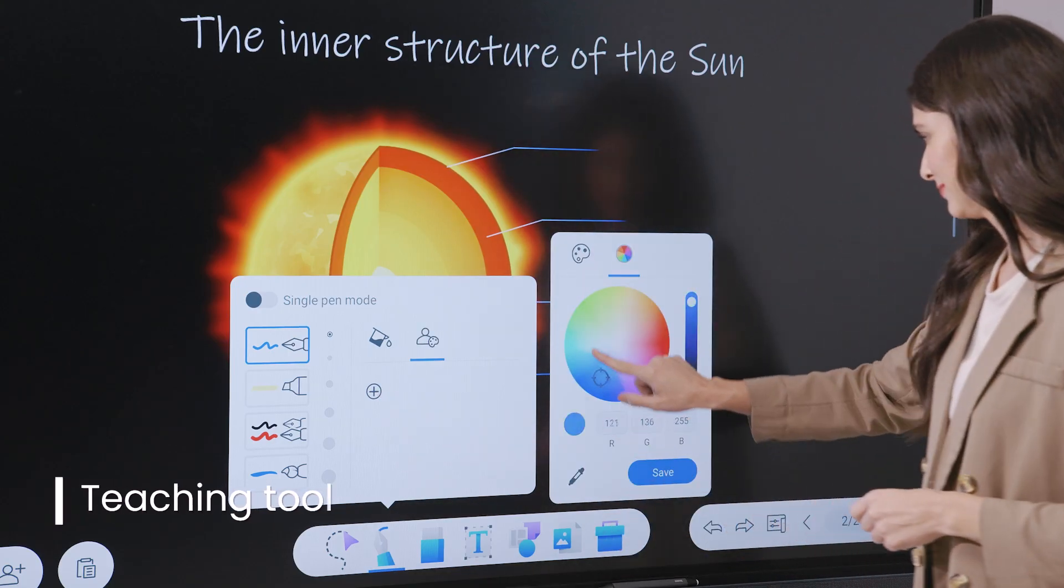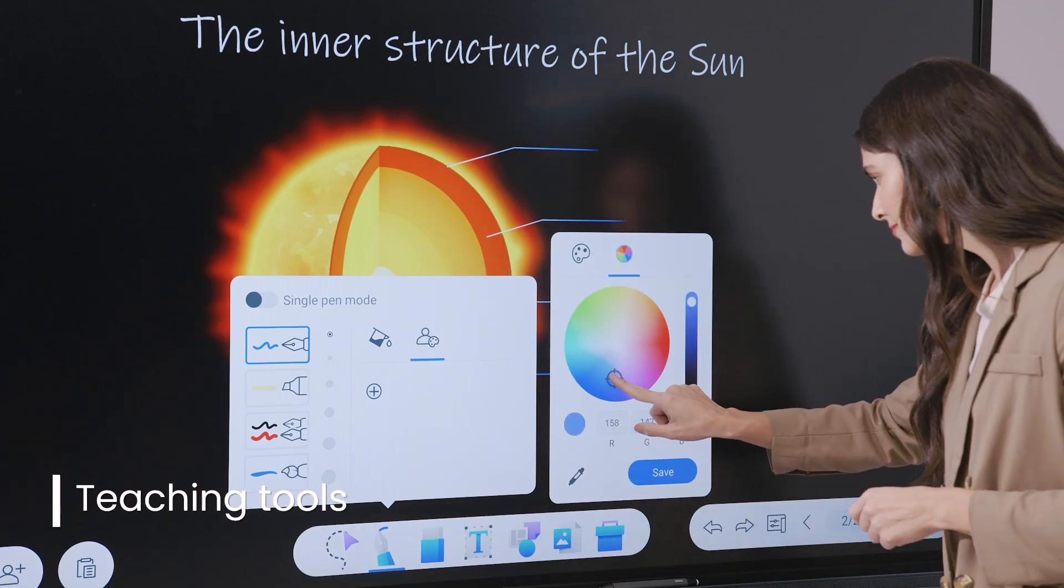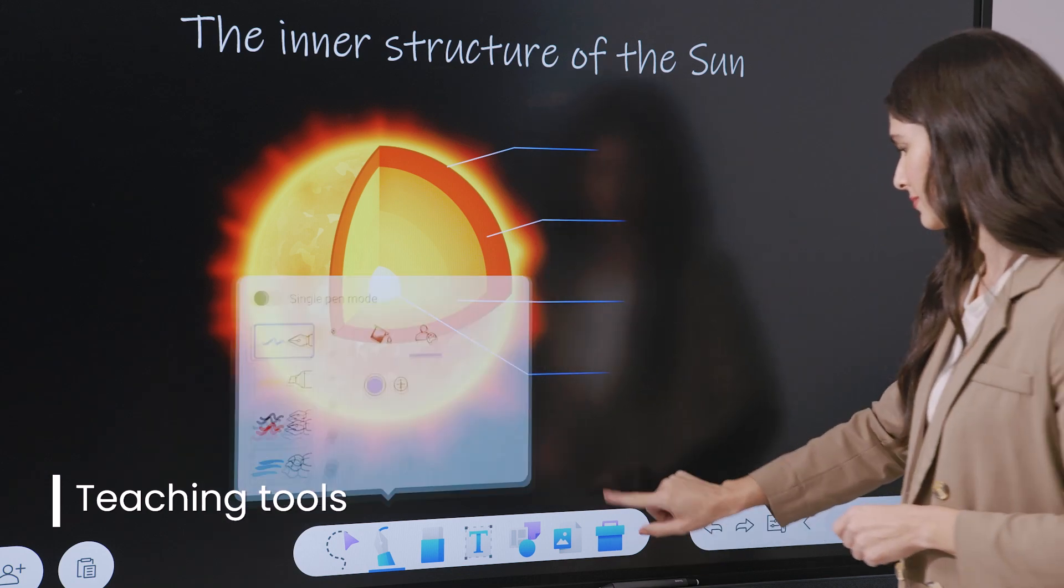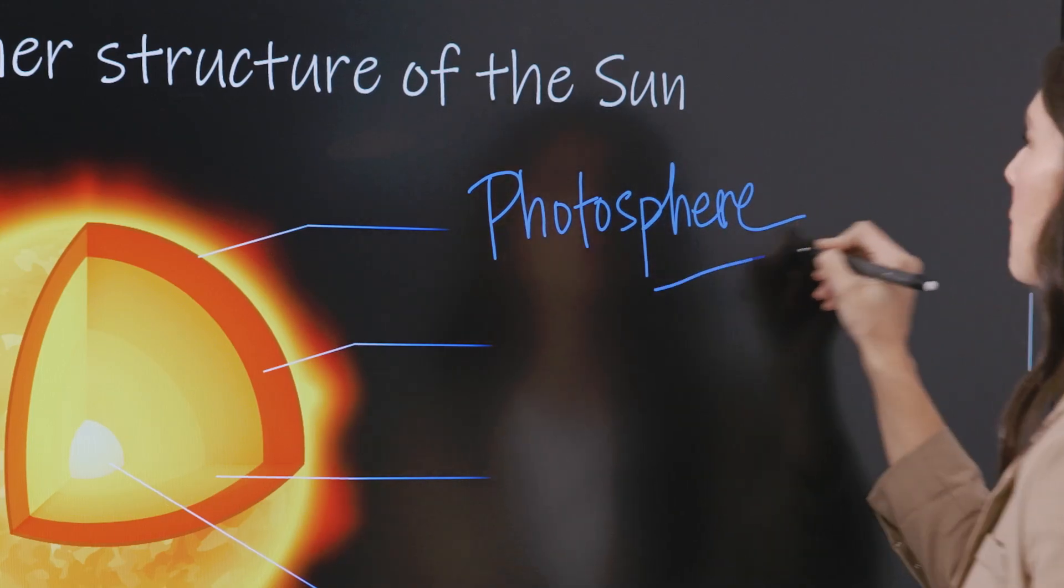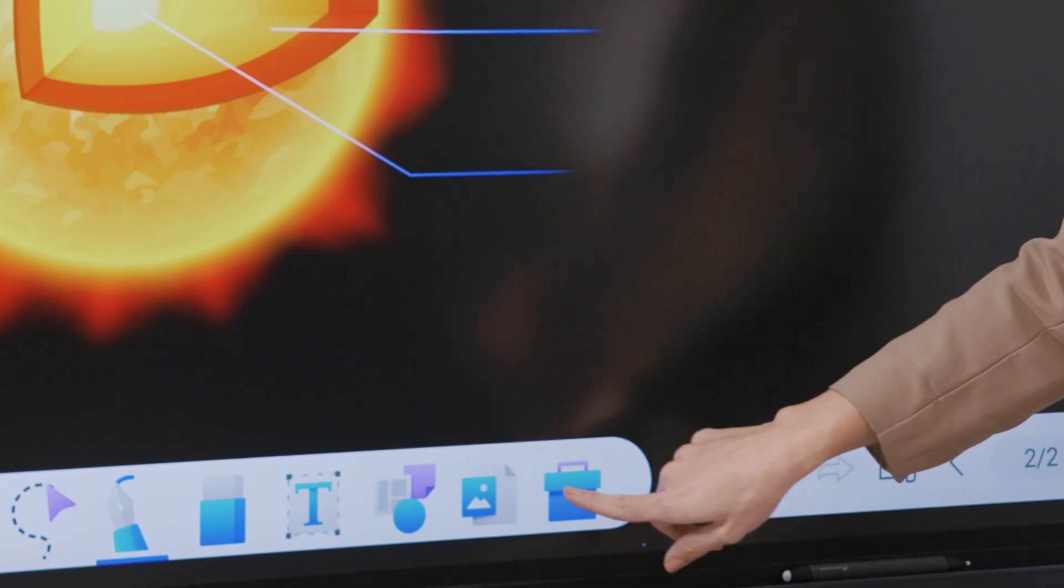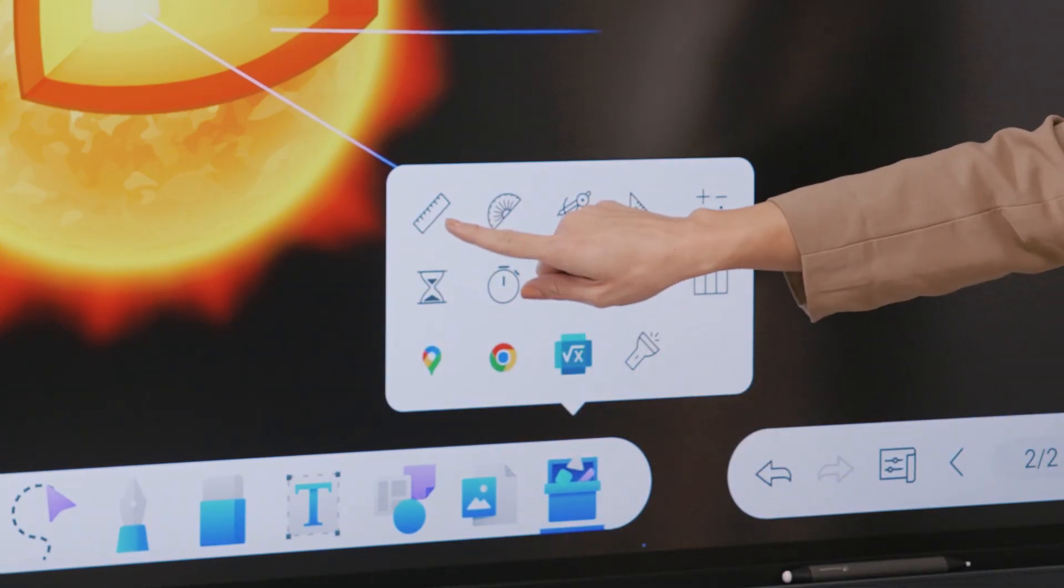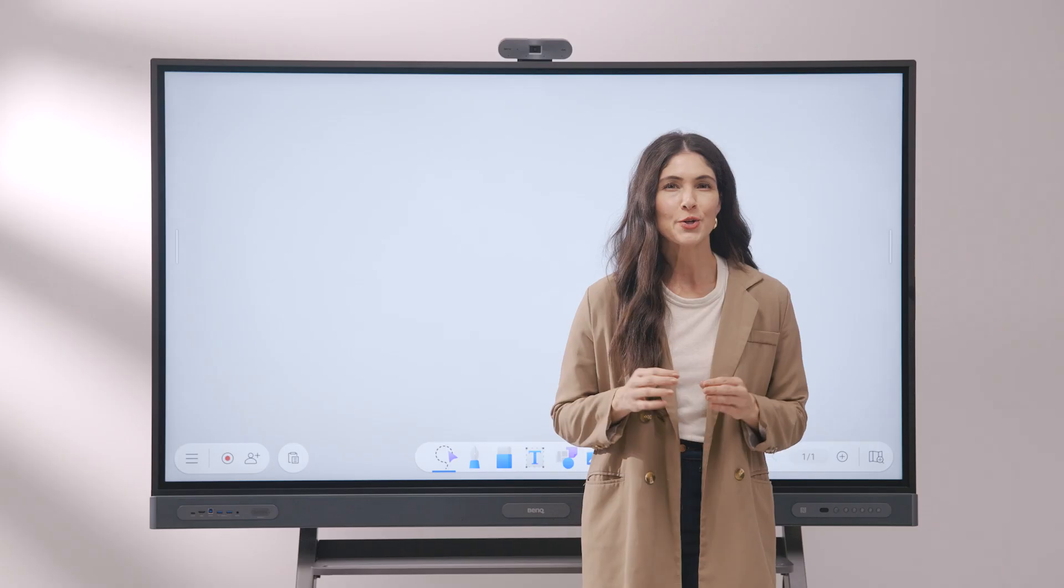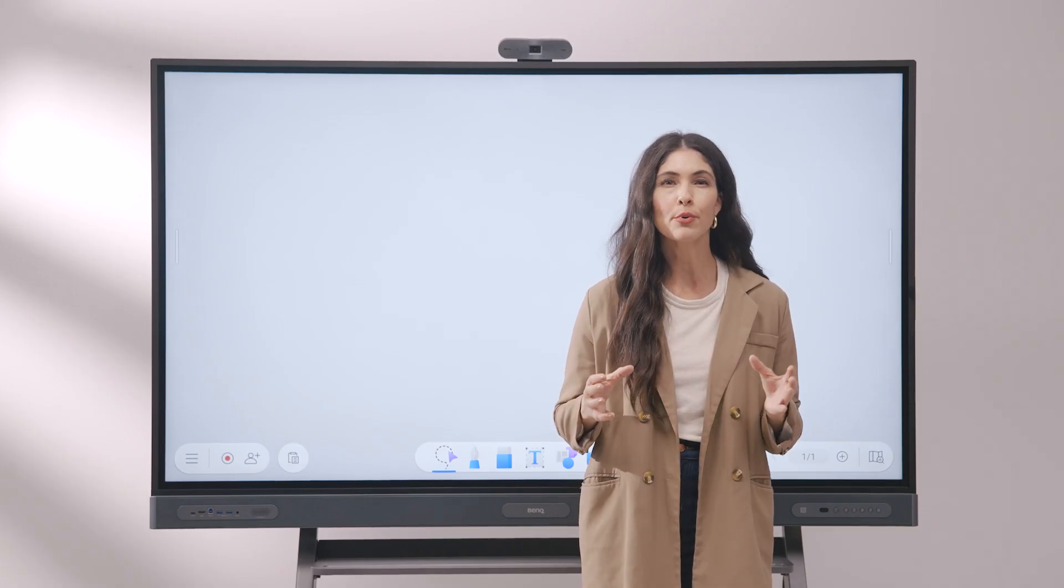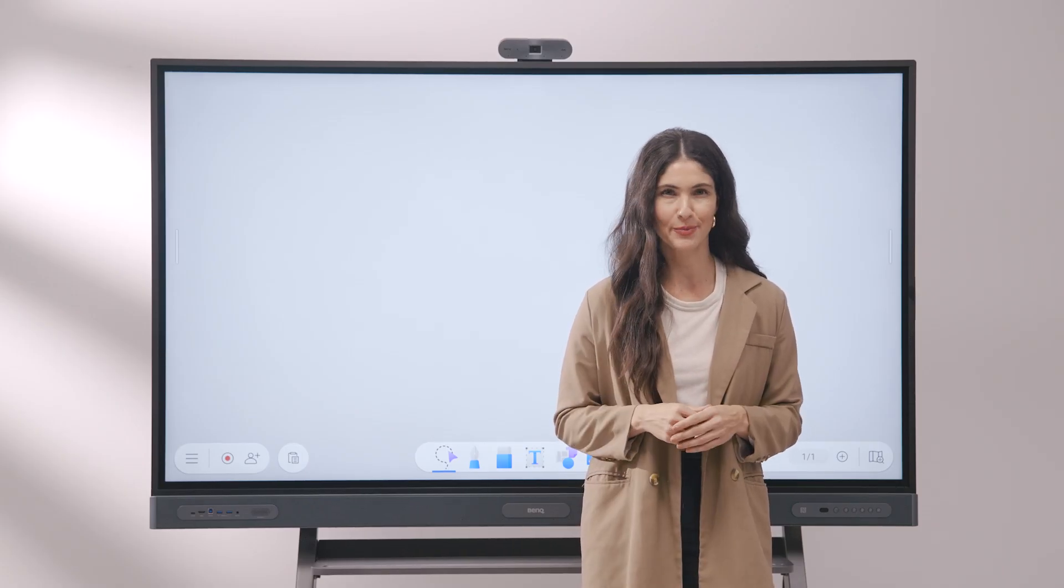While teaching, you have all the tools you need to create and deliver engaging and interactive lessons. EasyWrite has built-in pens and brushes with infinite colors, but also geometry tools such as the ruler, protractor, compass, and triangle. You also have different options for importing content directly onto the page.